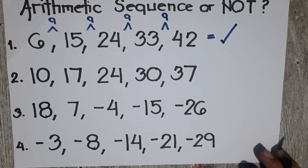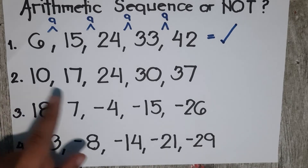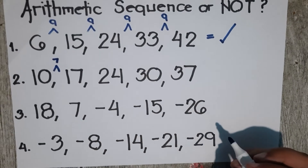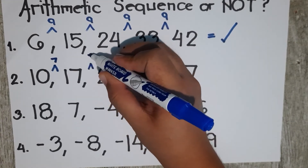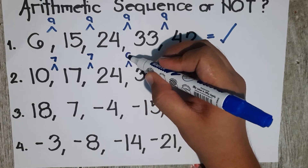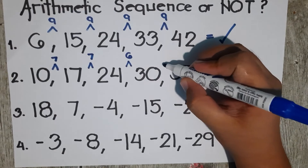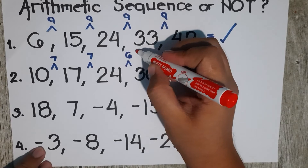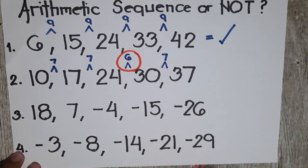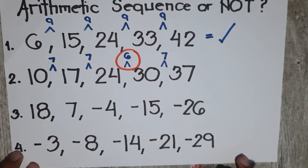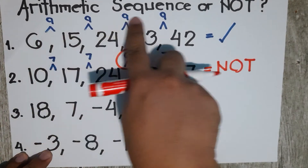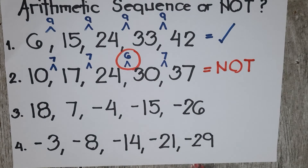Let's go to number 2: 10, 17, 24, 30, and 37. From 10 to 17, the common difference is 7. From 17 to 24, the common difference is 7 as well. From 24 to 30, the common difference is 6. From 30 to 37, the common difference is 7. Because we have one value out of pattern, this is not an arithmetic sequence, since the difference must be positive 7 throughout. In order for it to be arithmetic, the common difference must be constant — the same until the end.